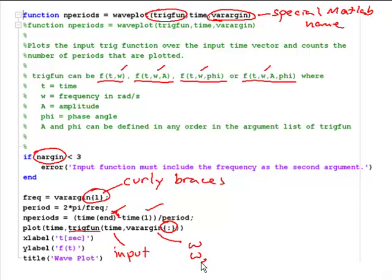Depending on trigfun, what varargin is going to have is either omega, or omega and the amplitude, or omega and the phase angle, or omega, the amplitude, and the phase angle.